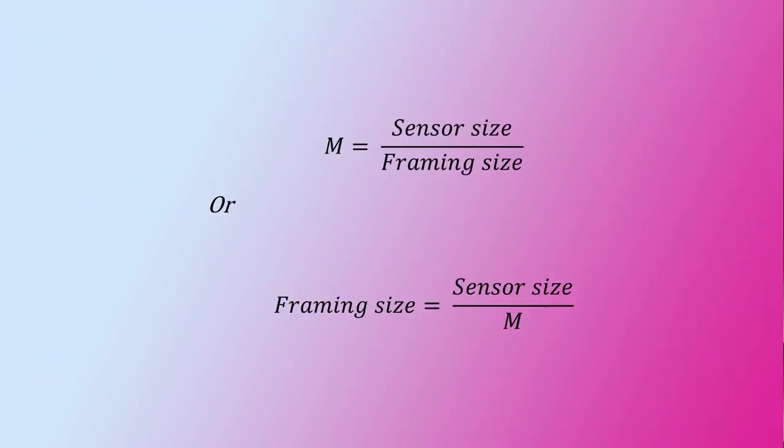From the previous formula, we can also determine the frame size if we know the size of the sensor and the desired magnification M. By manipulating that formula, we can write frame size equals sensor size divided by magnification M.